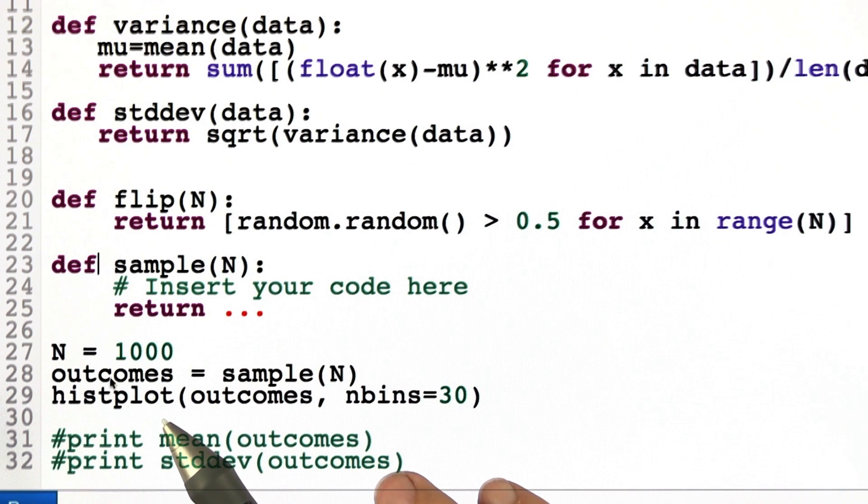The means will be continuous. I can do a histogram. It'll be better with many bins. So this notation over here gives me 30 bins.